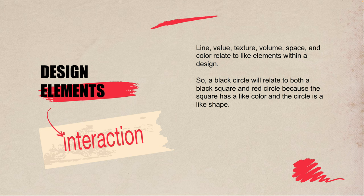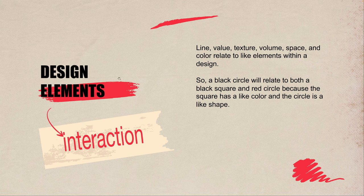A black circle will relate to both a black square and a red circle — it relates to the other circle even though they're different colors, and the black relates with black. Even three somewhat arbitrary objects in a design, along with text, will sort of interact and relate to each other when they share the same color.